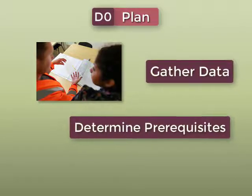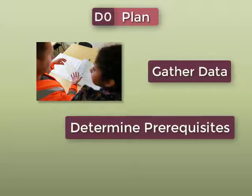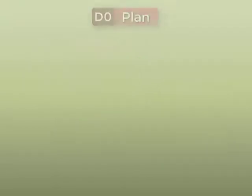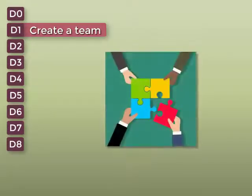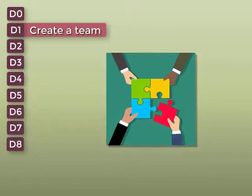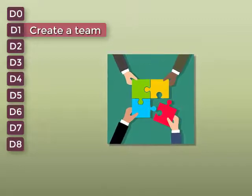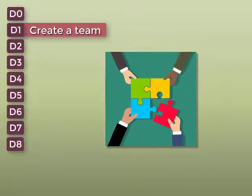By understanding the background of the problem this enables a quality engineer to move into the next step which is D1 where the team is created. It's important to select and establish the team that have the appropriate product or process knowledge based off of the quality issue at hand.